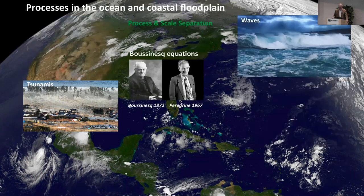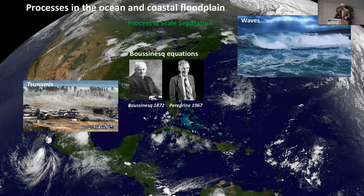Next, if you want to deal with dispersive-type waves, you go to Boussinesq class models — there's a whole variety of those. They started with Boussinesq himself in the 1870s, although most modern theories are based up around 1967. That covers waves, transforming waves, and infragravity waves really well — for example, when tsunamis are making their way on land.